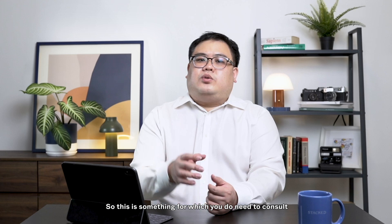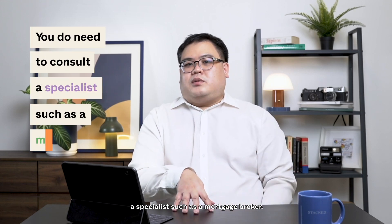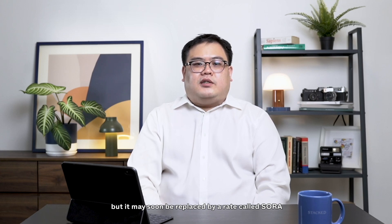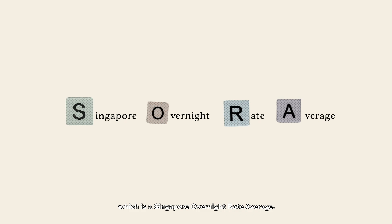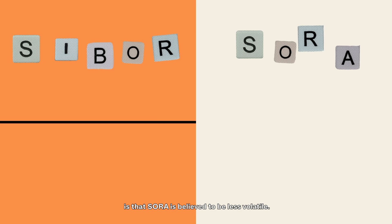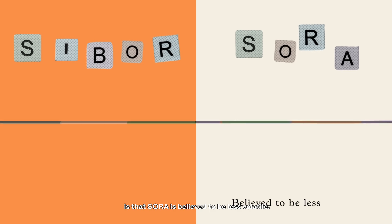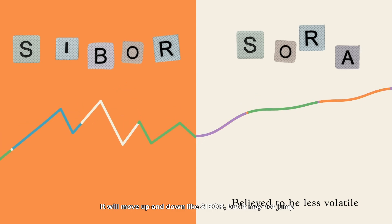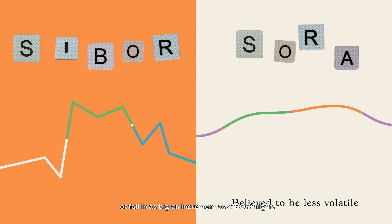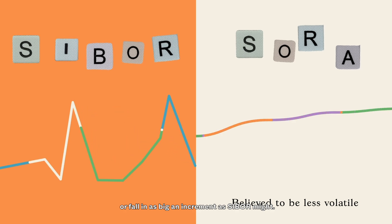This is something for which you do need to consult a specialist such as a mortgage broker. As a final aside, SIBOR may soon be replaced — we do not know when exactly — but it may be replaced by a rate called SORA, which is the Singapore Overnight Rate Average. The only difference between SORA and SIBOR that matters to a home buyer is that SORA is believed to be less volatile. It will still fluctuate and move up and down like SIBOR, but it may not jump or fall in as big an increment as SIBOR might.